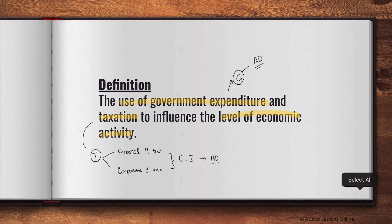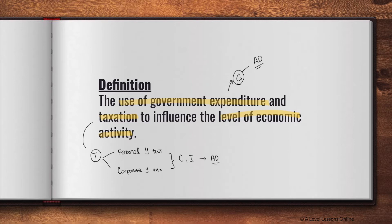When it comes to fiscal policy, the aim is to influence AD. We can either increase AD to ensure economic growth is achieved, or we can aim to reduce AD — assuming the economy is at full employment — to help reduce inflation. We'll look at how this works in more detail in videos to come.